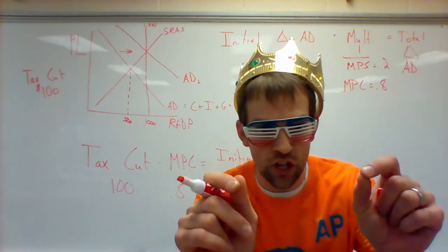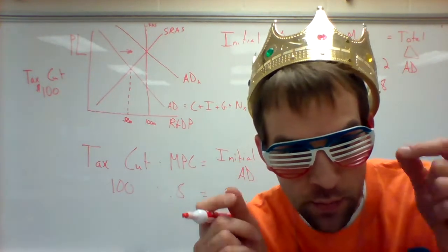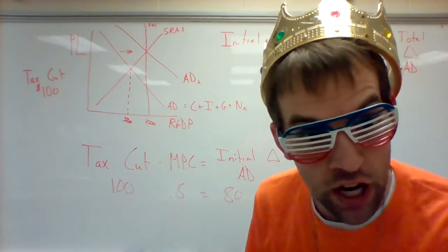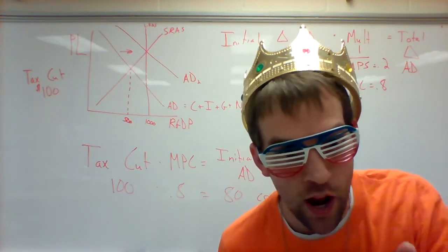So initially your curve changes 80 bucks. Notice this is different. When government spent a hundred, the initial change was a hundred. So you're going to get a different total change here. Watch me do this.